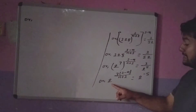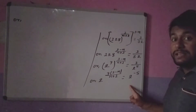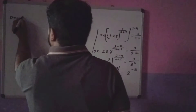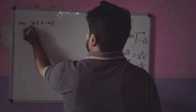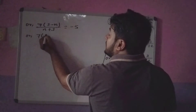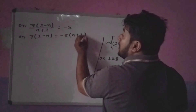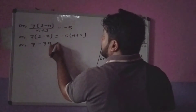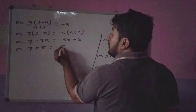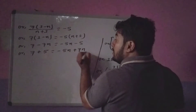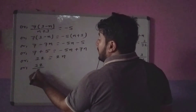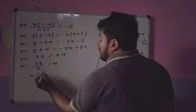Applying the law of indices: 7 minus 7n equals minus 5n minus 5. Rearranging: 7 plus 5 equals minus 5n plus 7n, which gives 12 equals 2n. Therefore, 12 divided by 2 equals n, so n equals 6.